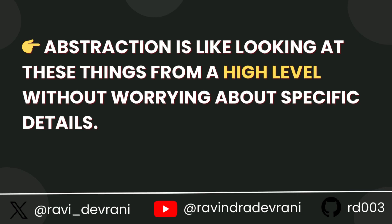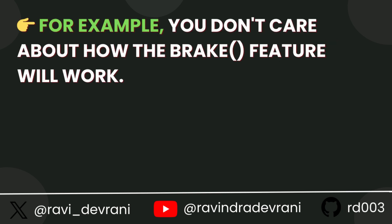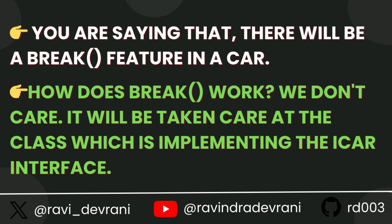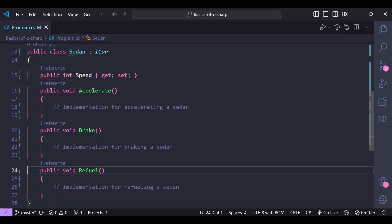Abstraction is like looking at things from a high level without worrying about the specific details. For example, you don't care about how the brake feature will work. You are saying that there will be a brake in your car, and how the brake works — we don't care. It will be taken care of at the class which is implementing the iCar interface, which will be shown in this example.